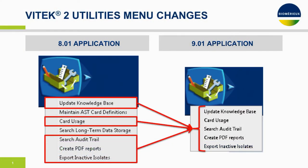The utilities menu has altered slightly from Vitec 2 Systems Version 8.01 to version 9.01. For example, the audit trail, card usage report, and create PDF reports remain, but both long-term data storage and maintain AST card definitions have been relocated to the web application.